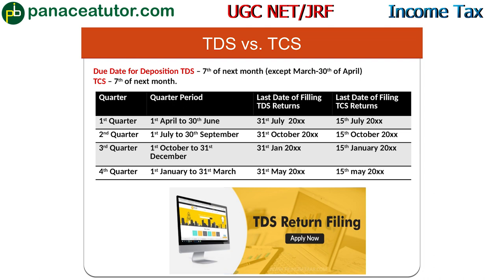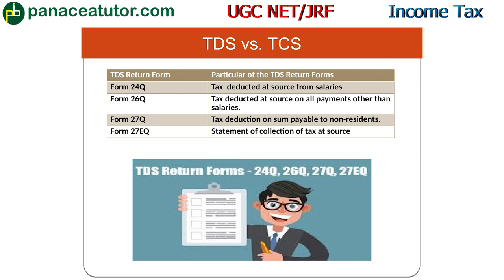Just as there are ITR forms, there are specific forms for TDS returns. Form 24Q is for Tax Deducted at Source from salaries. Form 26Q is for TDS on all payments other than salaries. Form 27Q is for tax deducted on payments to non-residents. Form 27EQ is the statement of collection of tax at source, i.e., TCS.